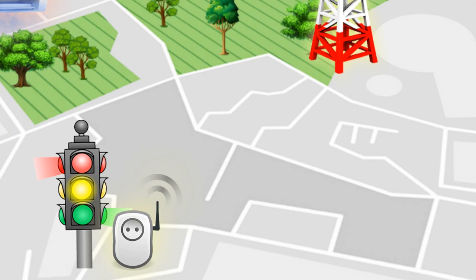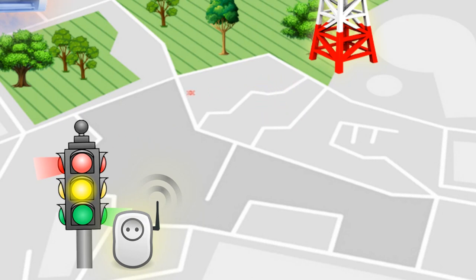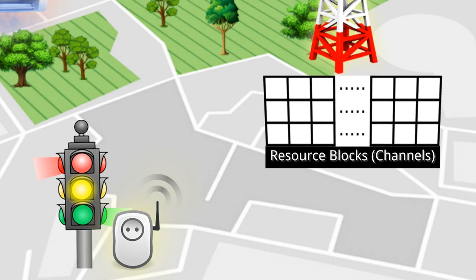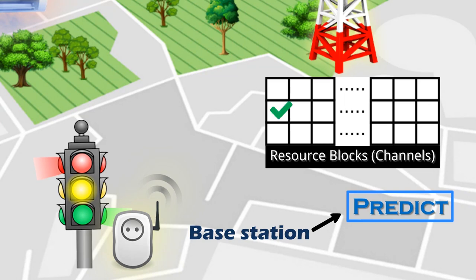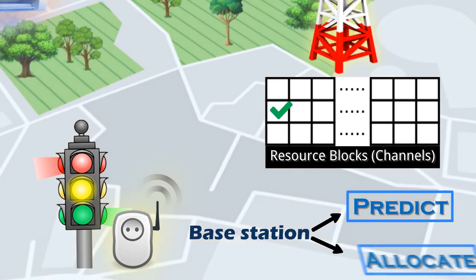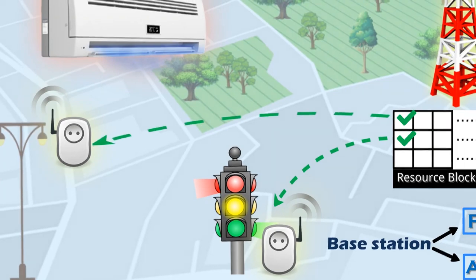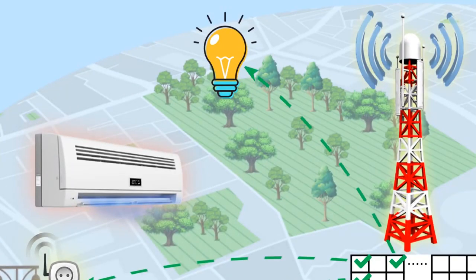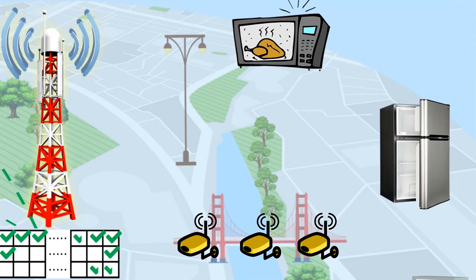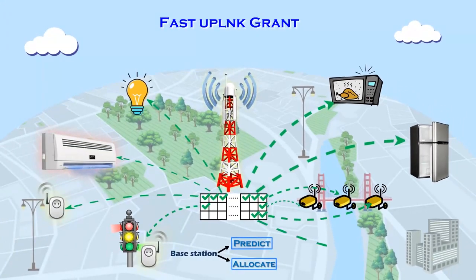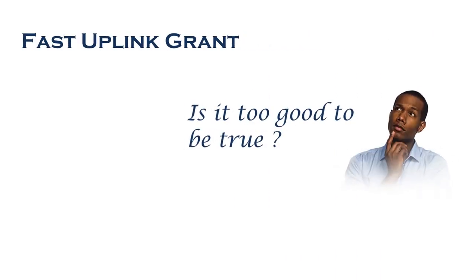The trick is that the base station does all the allocations without waiting for scheduling requests by any device. In order to do that, the base station first predicts the time step at which the device is going to transmit, then it allocates the block and sends the fast-tupling RAND to the device. With fast-tupling RAND, the base station can optimally allocate resource blocks to devices waiting to transmit. Not only does it reduce delays, it gets rid of the hassle with signaling overhead as well.